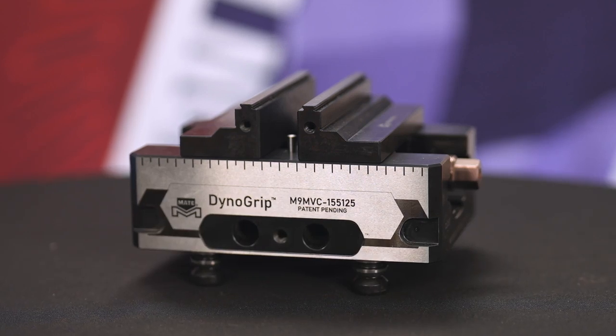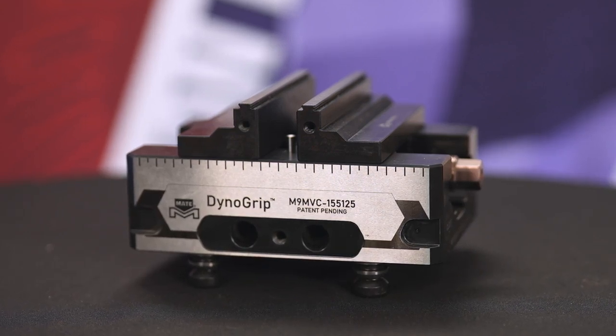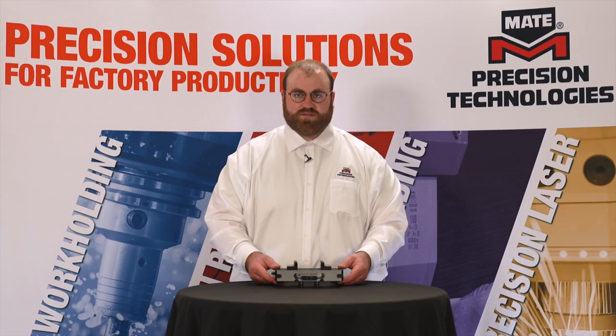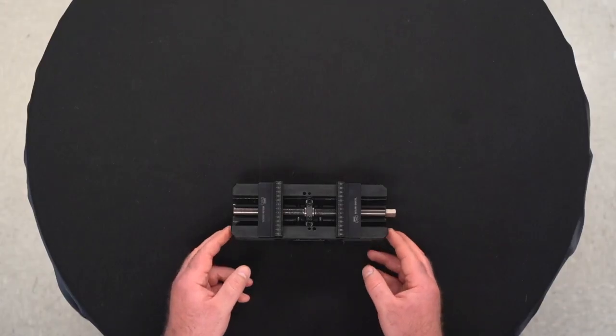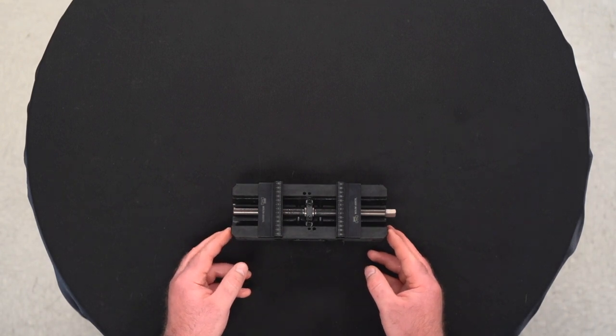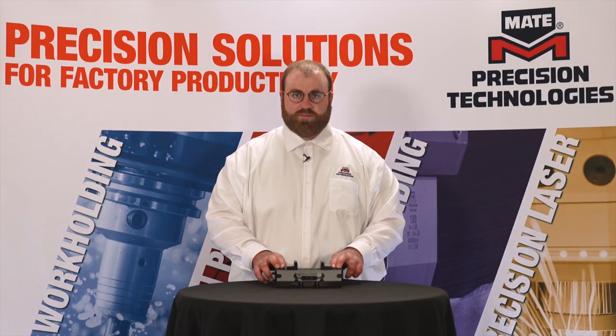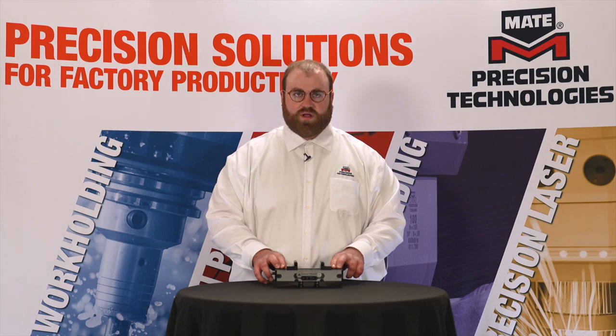All Mate dyno grip vices are constructed using the best quality tool steels and we then apply high quality surface finishes. This gives us a core hardness of 45 to 50 Rockwell hardness and a surface finish up to 65 Rockwell hardness.